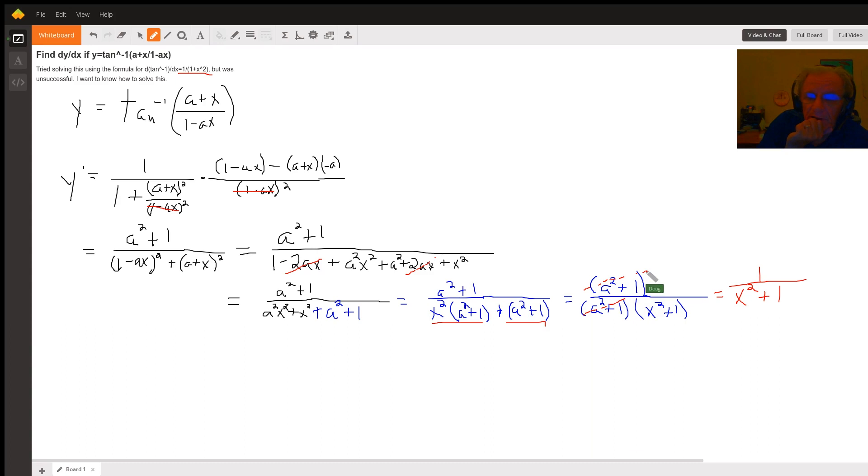And lo and behold, there is a common factor in the numerator and denominator. A squared plus 1s cancel out. And there's your final answer, at least in simplest form, 1 over the quantity x squared plus 1.